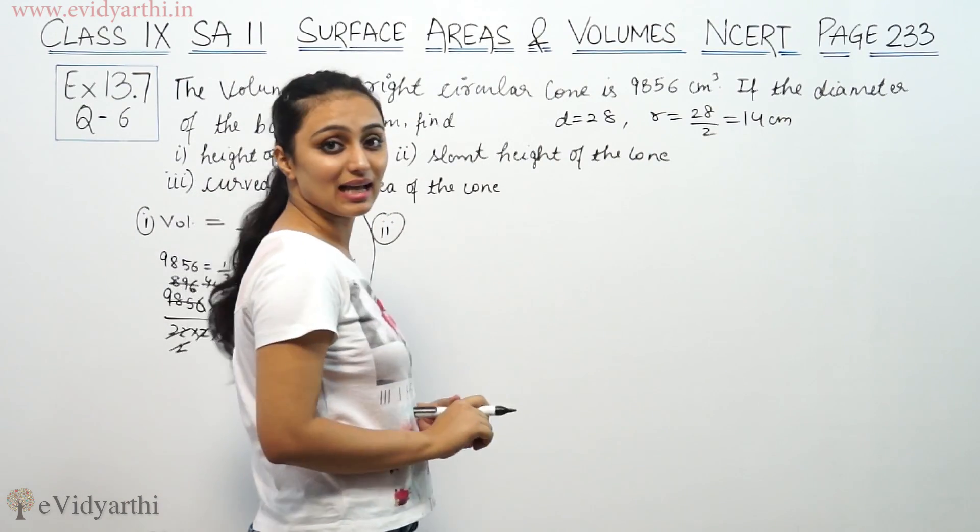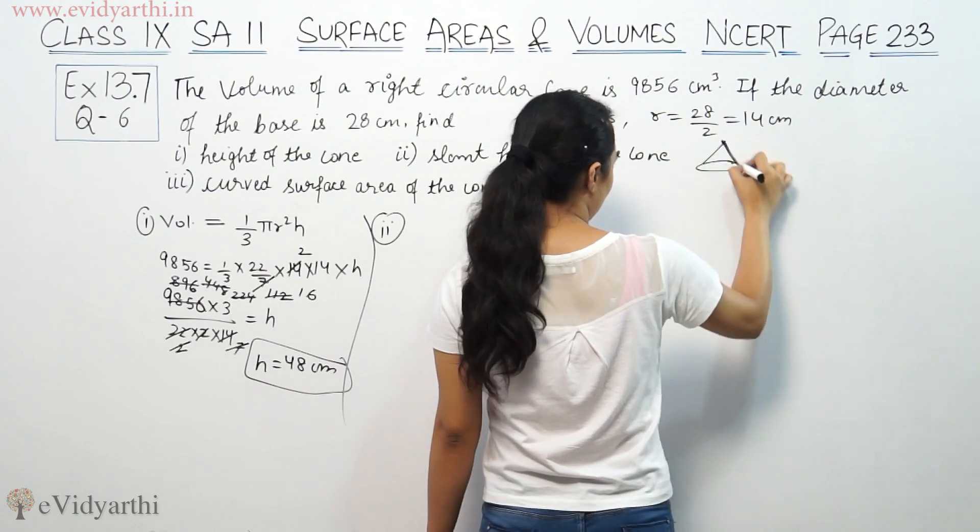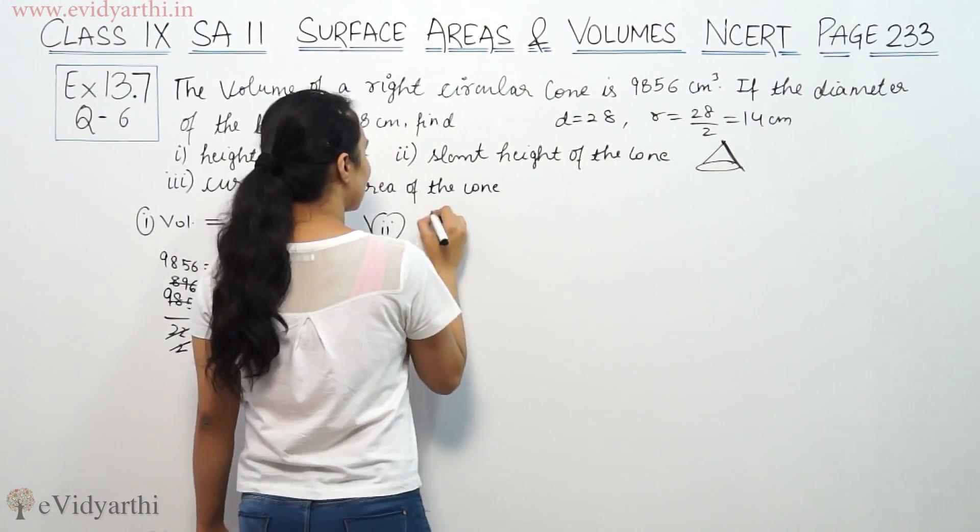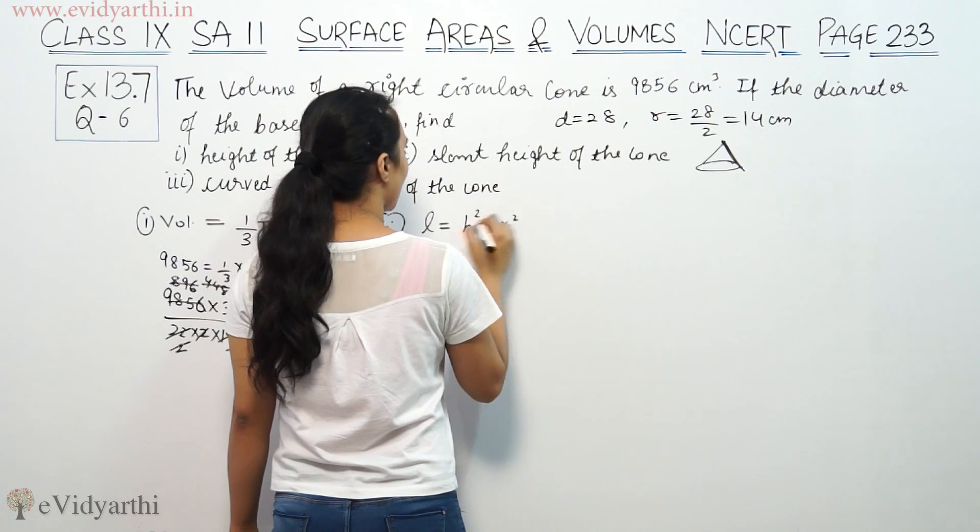Second case we are asking for slant height. Slant height means, if this is a cone, the slant height formula: L is equal to √(h² + r²).